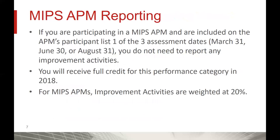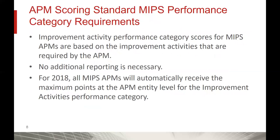There are some unique aspects of this performance category if you're a MIPS APM. If you are participating in a MIPS APM and you're included on that APM's participant list under one of the three key assessment dates — March 31st, June 30th, or August 31st — you will not need to report any improvement activities. You'll receive full credit for this performance category in 2018. For MIPS APMs, improvement activities are weighted at 20%, and all MIPS APMs will automatically receive the maximum points at the APM entity level for this performance category.